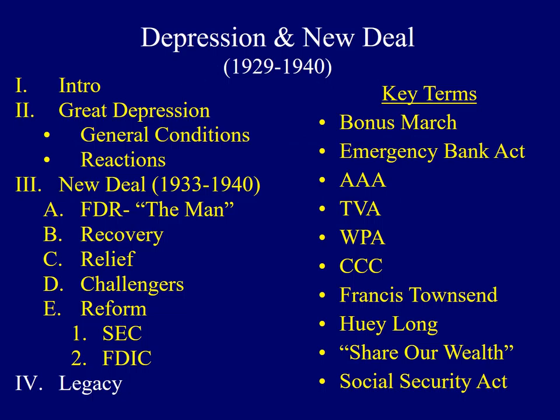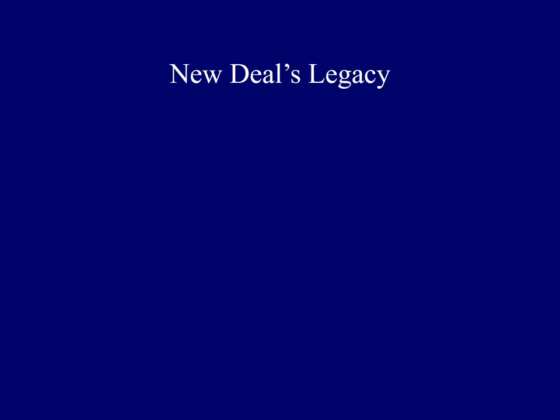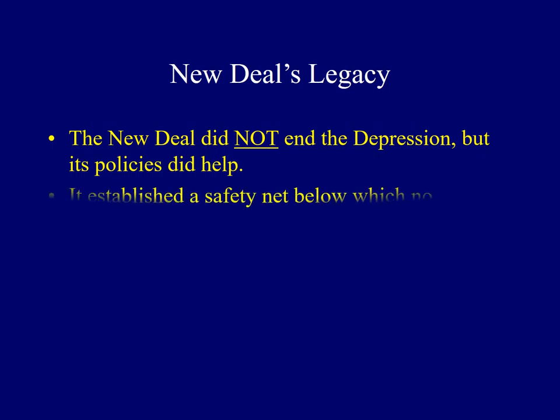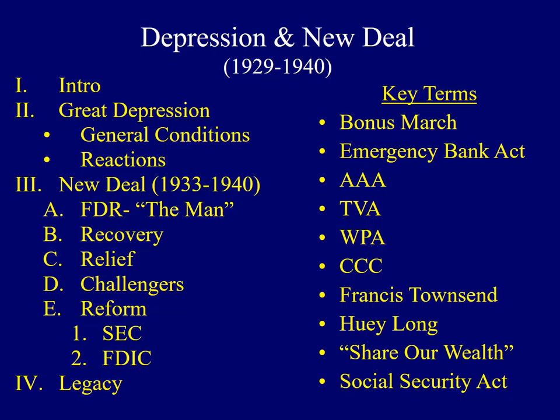Now that we've looked at the major programs included in the New Deal, let's look at the legacy it's left behind. Roosevelt's New Deal was incredibly popular among a majority of the American people. However, it did not end the Great Depression — while it didn't end the Depression, the policies did help the American people in a time of great need. What it did do was establish a safety net below which no American would be allowed to fall, establishing the foundation of the modern welfare state. Maybe you think the government should maintain a minimum standard of living, or maybe you think people should rely on themselves — it's up for you to decide whether the legacy of the New Deal is a positive or a negative for the nation. This concludes the lecture over the Great Depression and New Deal; the next few slides will include hyperlinks to additional sites as well as sources used for this lecture.